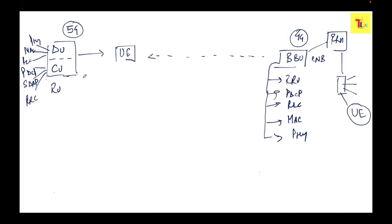The DU looks into RLC, MAC, and PHY. So DU and CU correspond to these virtualized functions instead of hardware BBU cards. PHY is the L1 part and has been disaggregated into low-PHY and high-PHY. PHY processing includes things like CRC attachment. So from 4G, we need to understand what RRC, SDAP, PDCP, RLC, MAC, and PHY each do — and this is as per 3GPP specification.